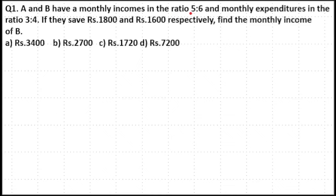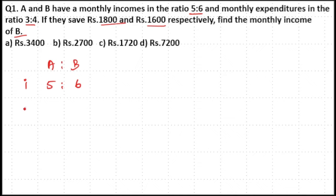A and B have a monthly income in the ratio 5:6 and monthly expenditure in the ratio 3:4. If they save 1800 and 1600 respectively, find the monthly income of B. So we have A and B here, their income is in the ratio 5:6, their expenditure is in the ratio 3:4, and their savings are 1800 and 1600 respectively.